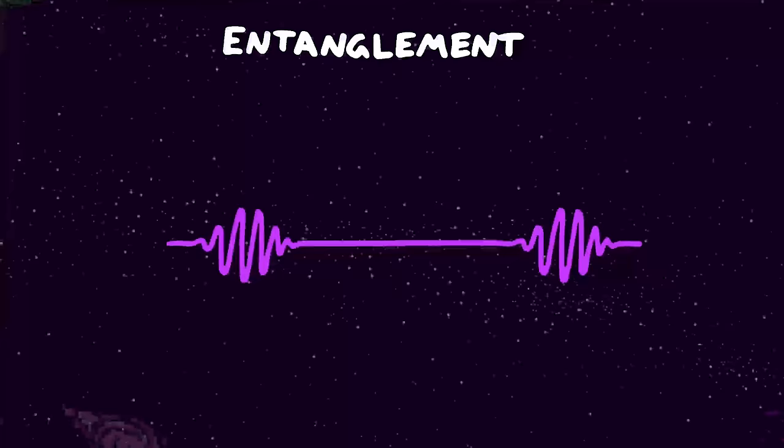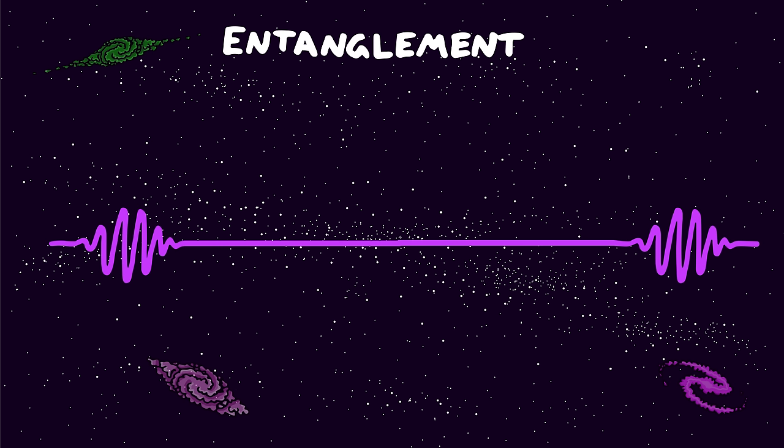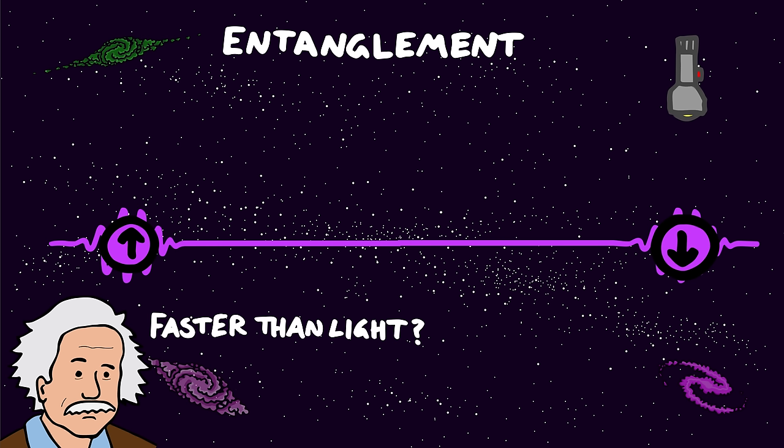Now for entanglement. Let's say two electron waves meet. Their waves interfere with each other and become mixed up. This means that mathematically we now have one wave function that describes everything about both electrons, and they're inextricably linked, even if they move far away from each other. A measurement on one of the particles, like measuring if it's spin up or down, is now correlated with a measurement on the other, even if they move billions of miles away.